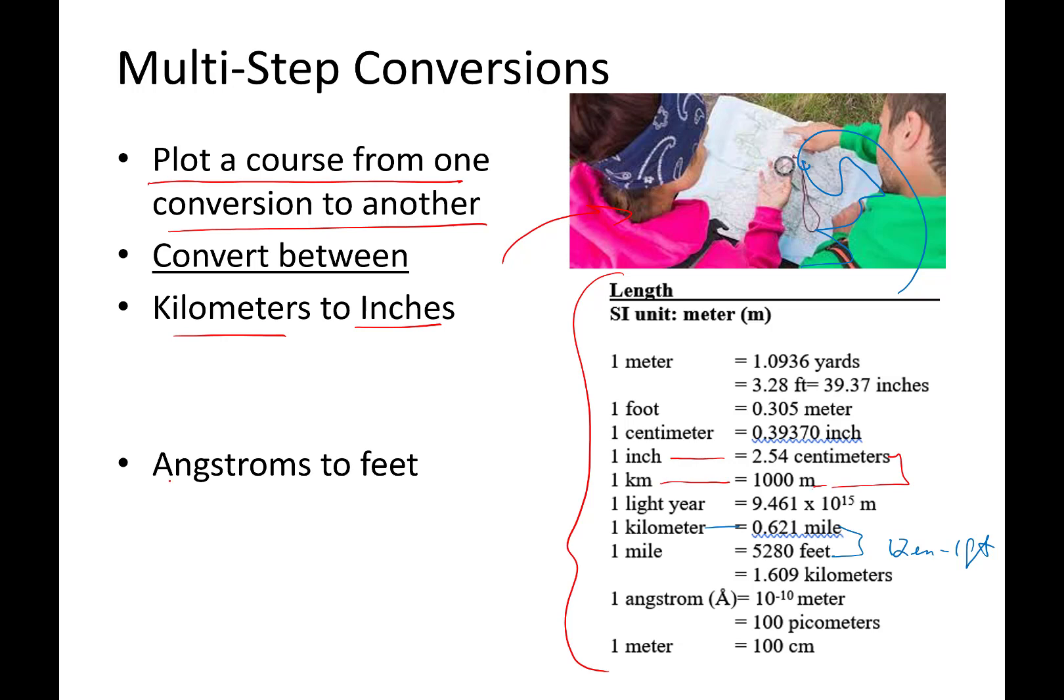Let's try this. Now, an angstrom is a unit that is 1 times 10 to the negative 10th. It's about the diameter of an atom. Chemists like this unit. So if you want to, hit pause, take a moment. See if you can just plot how would you get from angstroms to feet? And then we'll talk through some possibilities.